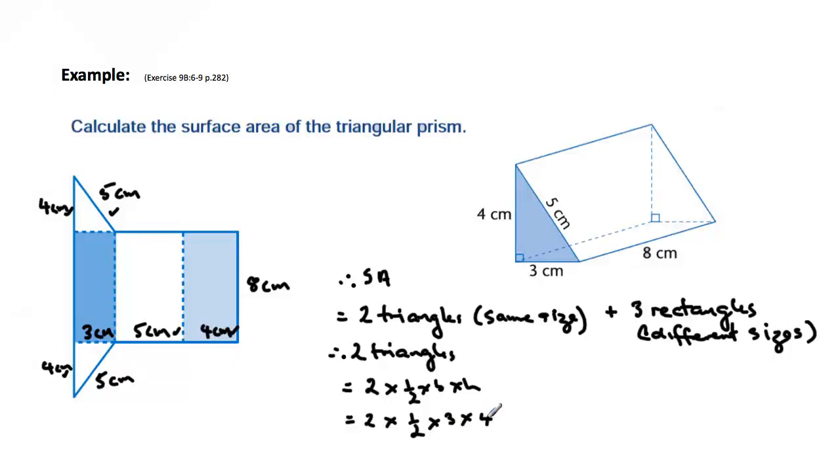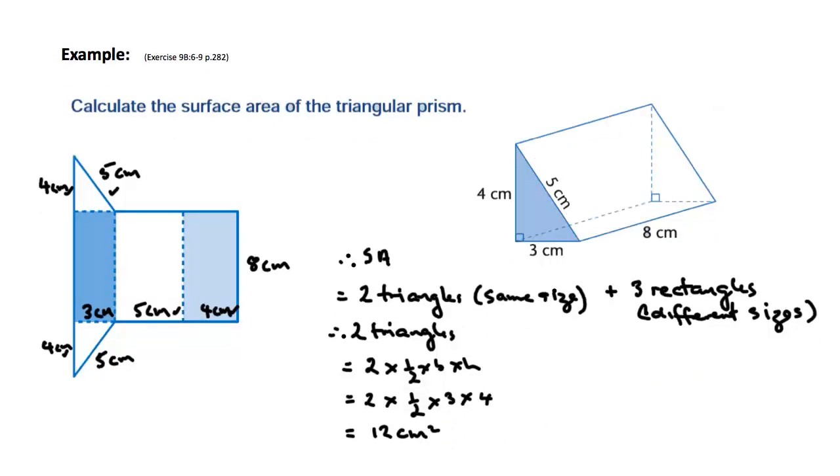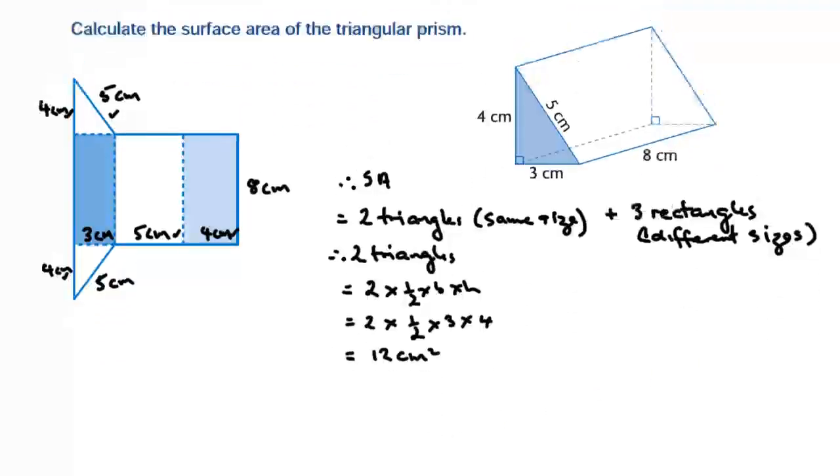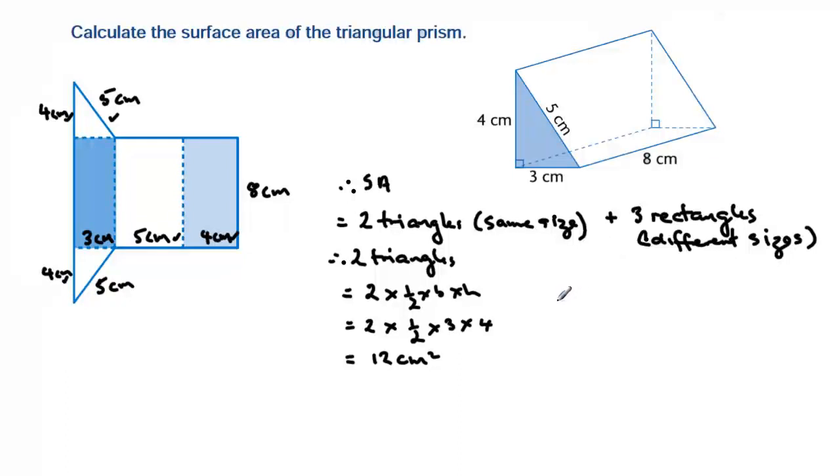So if we take that, 3 times 4 is 12, half of 12 is 6, 2 times 6 is 12, that would be the area of both our triangles added up. Now I'll just push this up a little bit, let's have a look at this side. So we know that we've got to add this together, so we can say plus, on this side, 3 rectangles. And now you just have to be systematic in the way that you work these out.